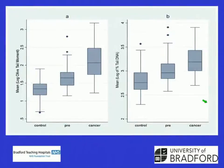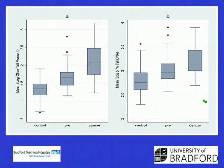Before going further, I want to show you the difference between the olive tail moment and percentage tail DNA. Using the olive tail moment, there is quite good separation between the control, the pre-cancerous or suspect cancer group, and the cancer group — three distinct levels clearly shown with box and whisker plots. If you use just percentage tail DNA, you get exactly the same sort of pattern, but the separation is not quite as clear.